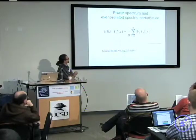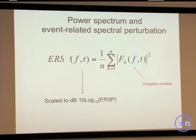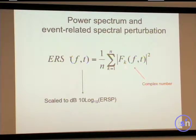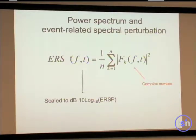Here is the formula for computing the Event Related Spectrum. This is my complex number — my vector at frequency f and time t for trial number k. I take the length of the vector, square it, and average — that's the actual formula implemented, it's very simple. The other thing we do for visualization is scale to dB by taking the log, because it's easier to see frequencies with very different amplitudes.